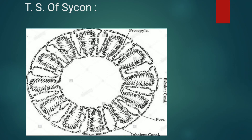The endoderm consists of flagellated choanocyte cells forming the lining of radial canals. Radial canals are alternately arranged with incurrent canals, which are connected to each other by prosopyles. Radial canals open into the spongocoel via apopyles. In the TS of Sycon, finger-like projections of flagellated chambers arranged in a characteristic circular manner are visible. The canal system is of the syconoid type.